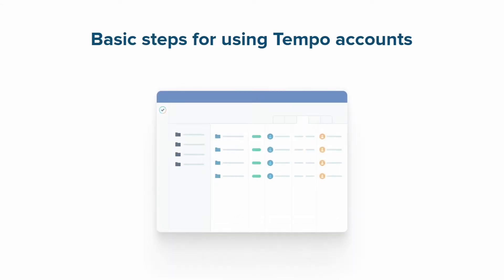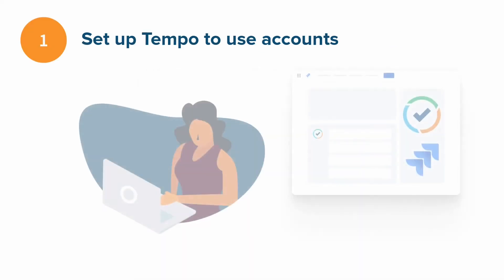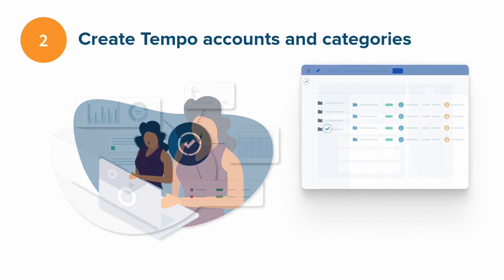So, what's the process for using Tempo Accounts? Here's an overview of the basic steps, which we'll be covering in this video series. First off, your Jira administrator gets Tempo set up for using accounts. They grant the Tempo account administrator permissions to the right people, and they configure the Tempo account custom field so that employees can log their time to accounts.